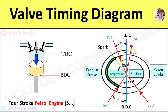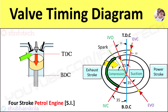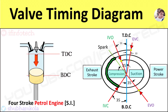Now compression stroke starts. The charge contained in the cylinder is compressed, so pressure and temperature of the charge increase. The mixture of petrol and air is ignited by an electric spark at 35 degrees before TDC position of the piston. The combustion of petrol releases hot gases which increase pressure at constant volume.